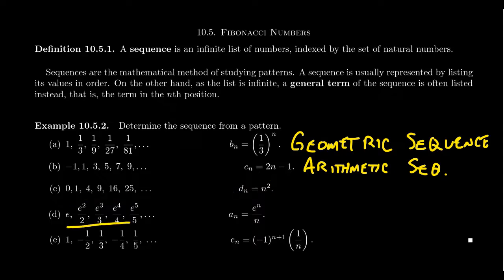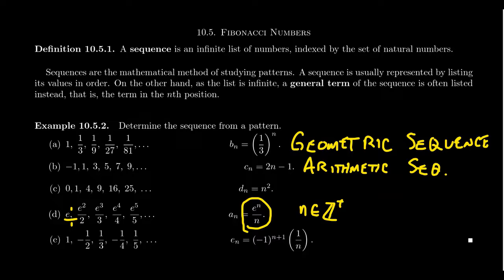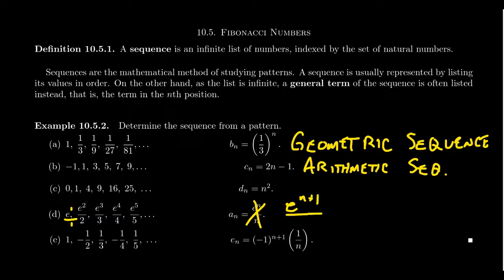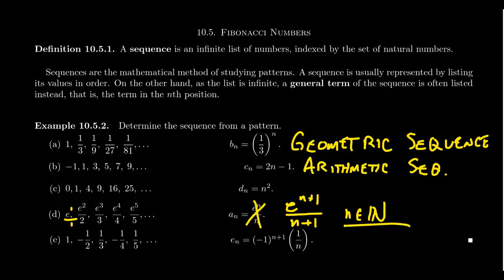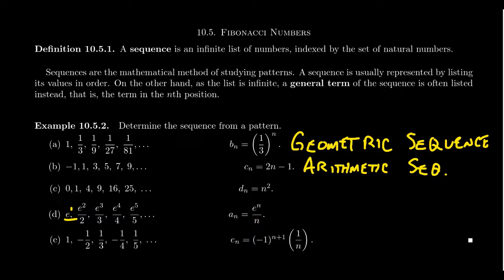What about the sequence e, e²/2, e³/3, e⁴/4, e⁵/5? The first term can be rewritten as e¹/1, and the general term looks like eⁿ/n. This is definitely a situation where the index set makes more sense to be the positive integers, because the formula requires division by n and we can't divide by 0. Alternatively, we could write the formula as e^(n+1)/(n+1), allowing n to be drawn from any natural number including 0 — though that makes the formula slightly more complicated. It comes down to style: do you want the full natural numbers with a more complex formula, or a simpler formula with a more restrictive index set? Either is fine.